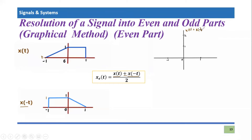This graph is basically of x(t) plus x(-t). So at t = -1, zero plus one means the amplitude should be plus one. At t = 0, the amplitude of x(t) is one, and x(-t) is also one, so one plus one would become two. At time equal to zero, its amplitude would be plus two.